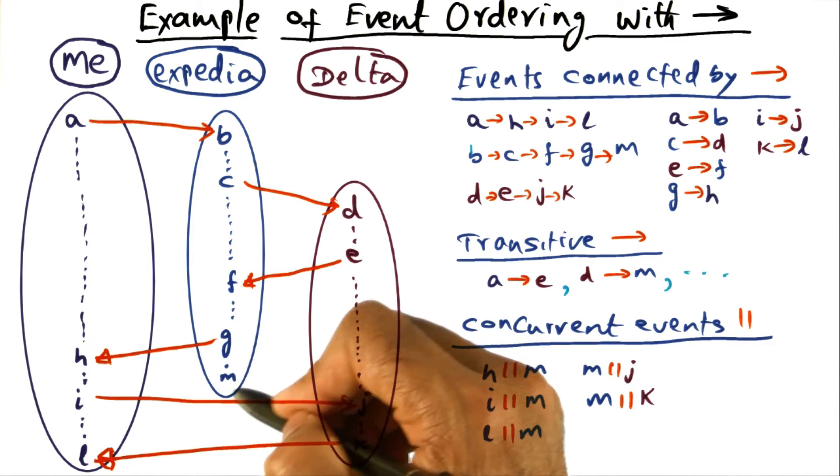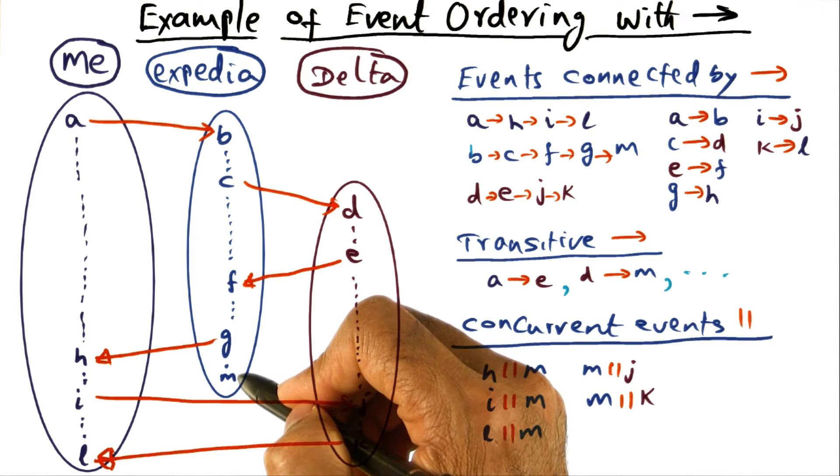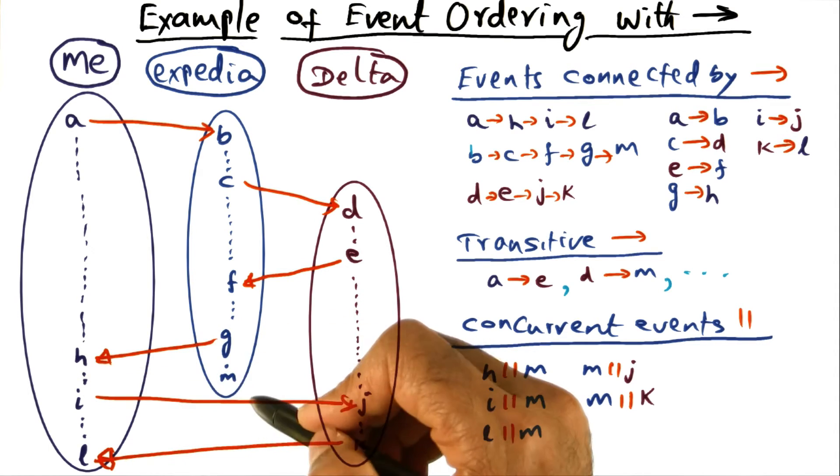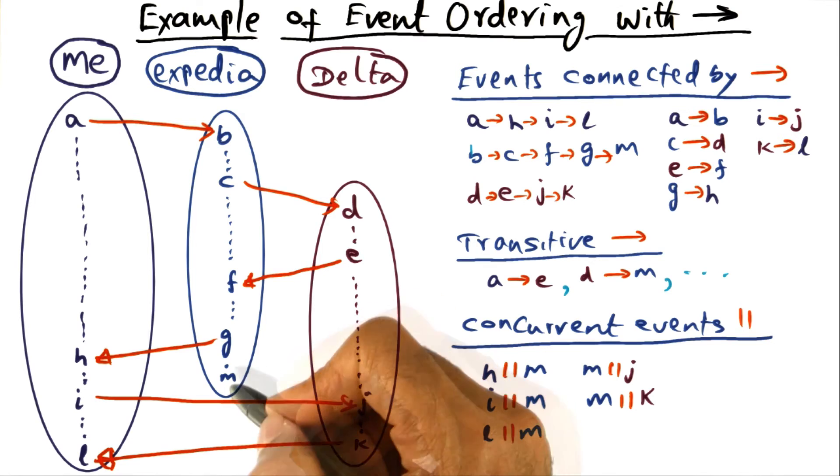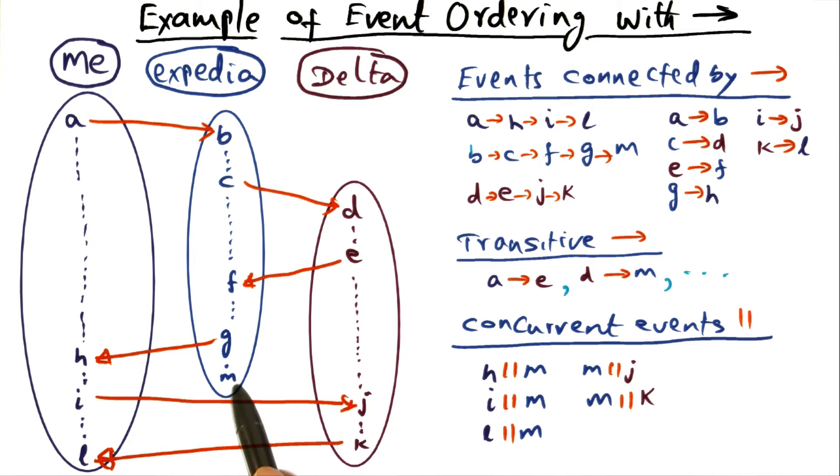This could have happened much later than this in wall clock time, or it could have happened much sooner than event M. So you can see that H is concurrent with M, and in fact all the events that you see here are going to be concurrent with M.